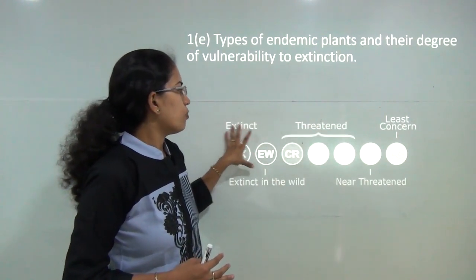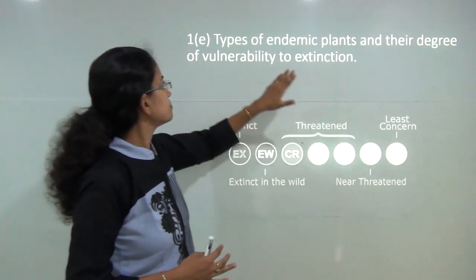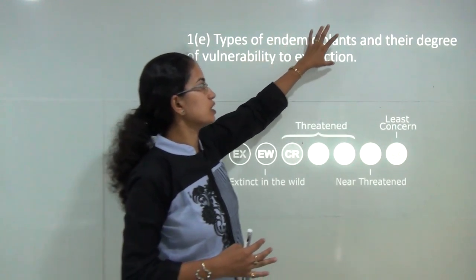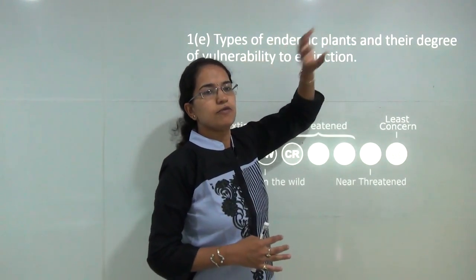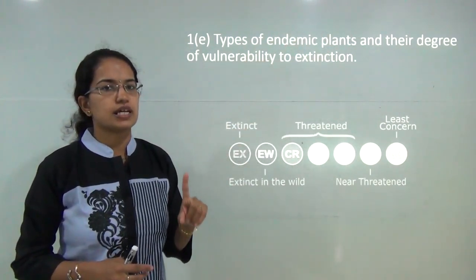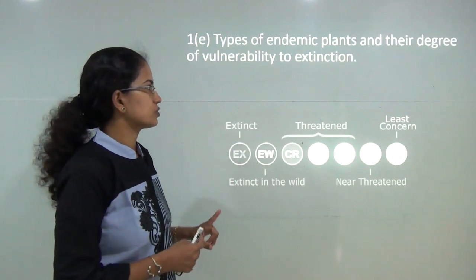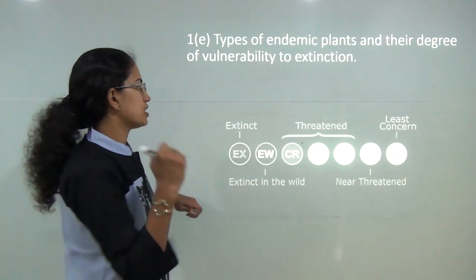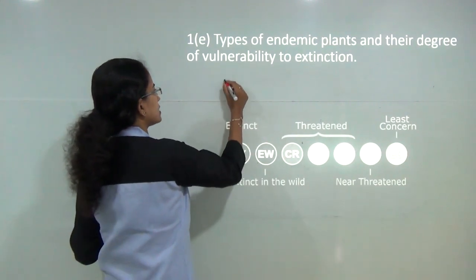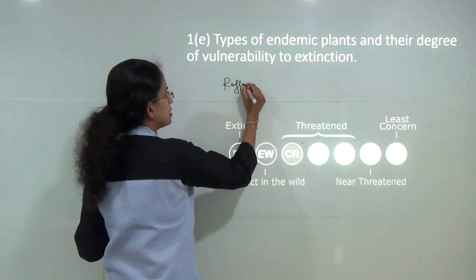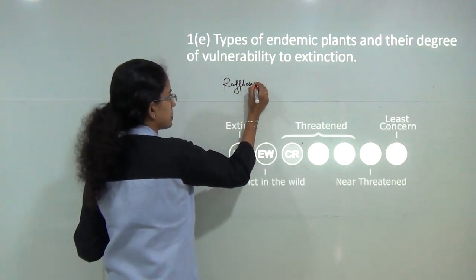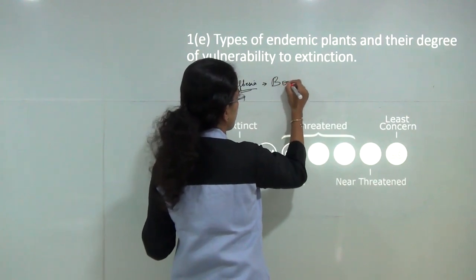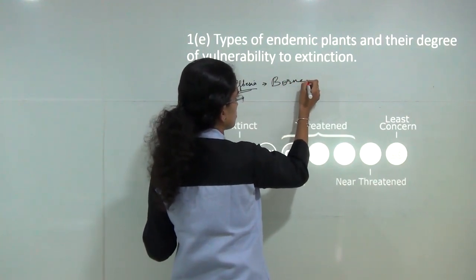Since the question focuses only on plants, cite specific examples. One good example is Rafflesia — the world's biggest flower — which is endemic to the region of Borneo and Sumatra.